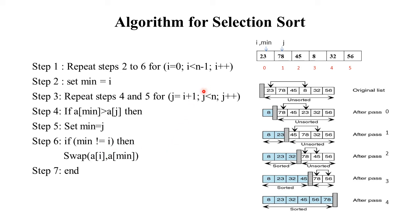We complete pass 0 and repeat steps 2 to 6. i is incremented by 1, so we enter pass 1. In pass 1, i is 1, so minimum is also 1, pointing to position 1. j starts at i+1 = 2. We find the smallest element from the unsorted array and repeat this process through pass 4 to obtain the sorted array.